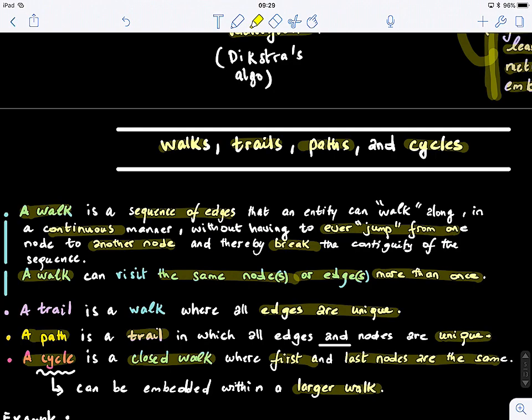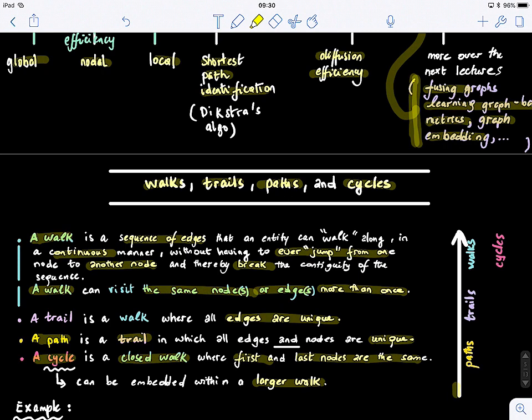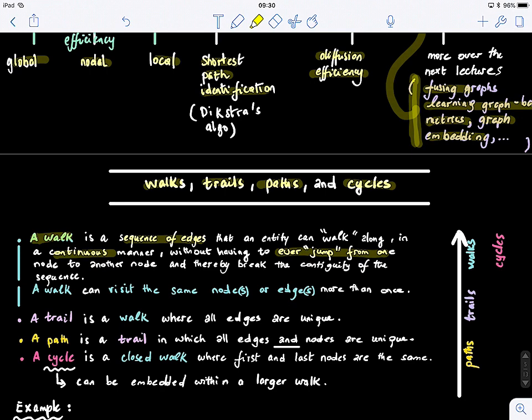Now, if we look at this, what is the relationship that we have here? We have paths, trails, and walks. If you want to say which one belongs to which one, basically, paths is a subset of trails, and trails is a subset of walks, and cycles also is a subset of walks.